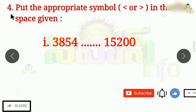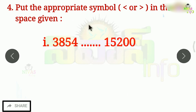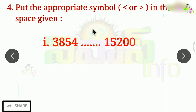The fourth question is: put the appropriate symbol, less than or greater than, in the space given. There are some problems with a space. We need to use the greater than or smaller than symbol. If you use the greater than symbol, the big number is on the left side and the small number is on the right side. If you use the smaller than symbol, the small number is on the left and the big number is on the right.